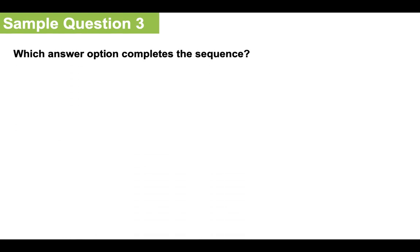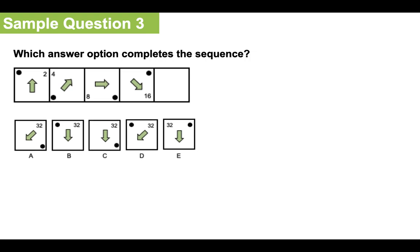Sample Question 3: Which answer option completes the sequence? We are presented across the top with a series of squares with arrows in there, and also black dots and numbers in different areas. And we have to choose from A, B, C, D or E which one completes the sequence.